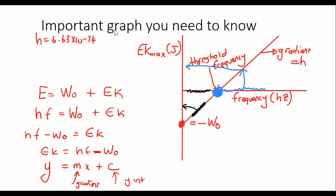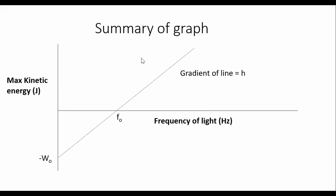Excellent, guys. So that's that. Let's go to the next slide where we've got a summary of this graph. So here we have it. We know that the gradient of the line, the gradient of the line is H, Planck's constant. We know that this here is your threshold frequency. And we know that your y-intercept is negative work function. And then the y-axis is called the maximum kinetic energy. And the x-axis is the frequency of the light.